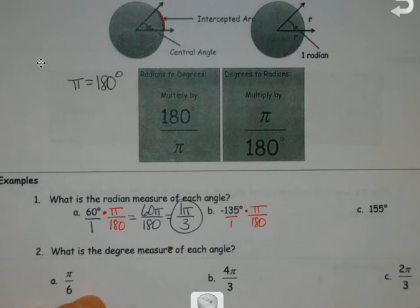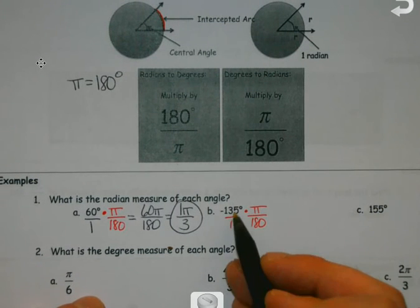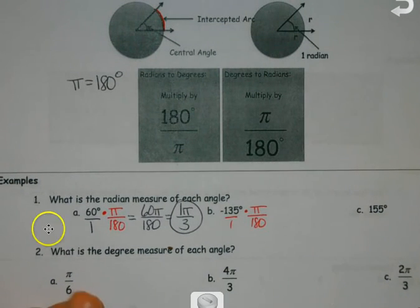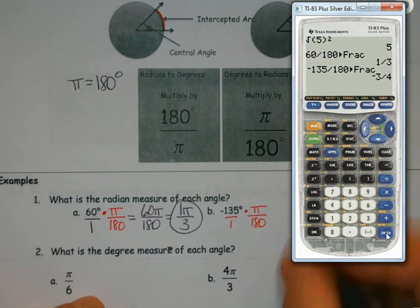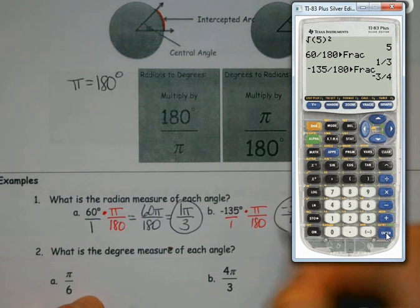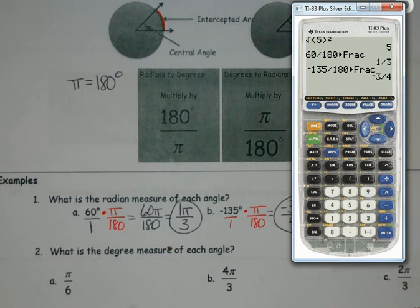And no matter what angle measure I'm given, if it's in degrees, I'm always going to do times π over 180. And some of you will get to be like, oh, so basically I'm just doing this divided by this, and I'm punching it in my calculator and seeing what I get out. And that is true. So negative 135 divided by 180, math, enter, enter. So I'd have negative 3π over 4.